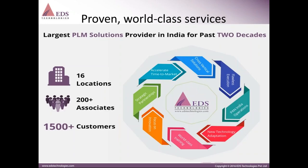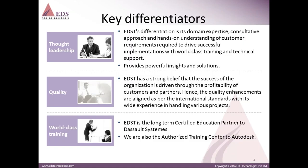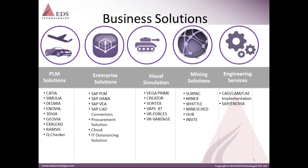We have different offices across India — 16 locations with 200 associates and 1,500 customers. We have been in India for the past two decades. Our business solutions target different industries: for PLM solutions we target automotive and aerospace industries; for enterprise solutions, all industries; for visual simulations, defense industries; and for mining solutions we have different products under the Geovia brand. Apart from that, we also offer engineering services covering CAD, CAM, CAE implementation, and SAP or Inovia.